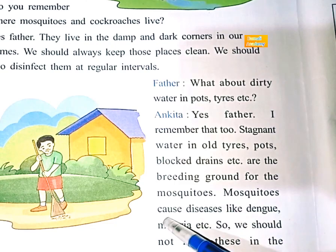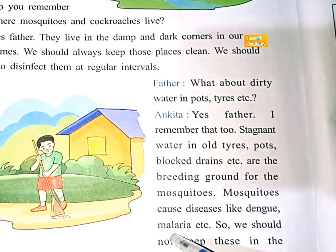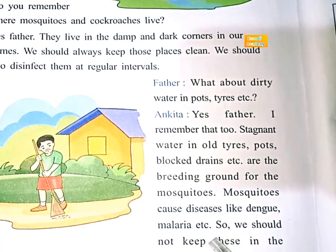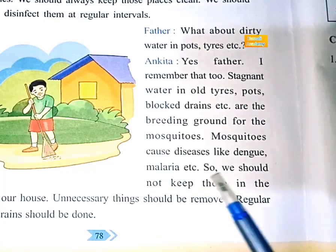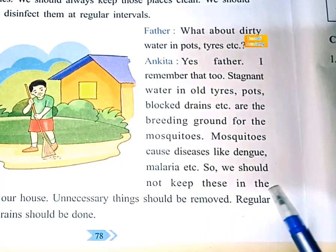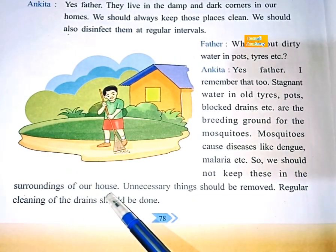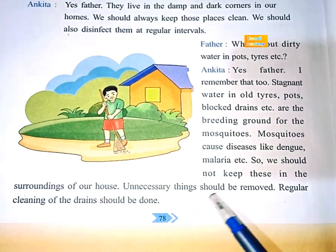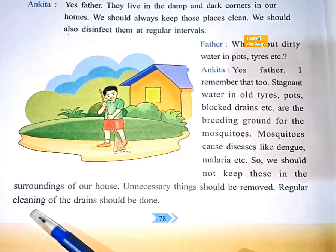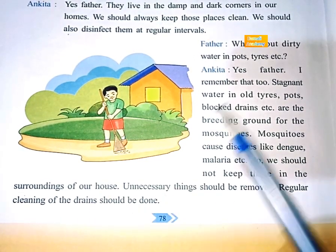Mosquitoes cause diseases like dengue, malaria, etc. So we should not keep these in the surroundings of our house. Unnecessary things should be removed. Regular cleaning of the drains should be done.